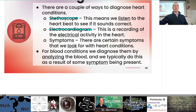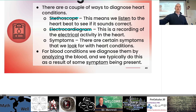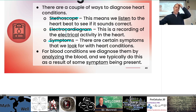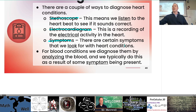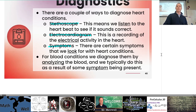ECG and EKG are the same thing. There are certain symptoms we look for with heart conditions. For blood conditions, we diagnose by analyzing the blood, typically as a result of some symptom being present. When you go get blood work done, if the doctor has reason to think you might have complications in the circulatory system, they'll often get your blood checked.